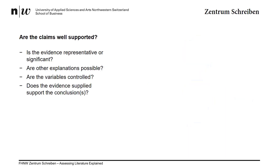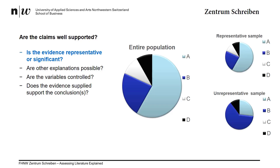There are four main aspects you should consider when assessing the level of support for the claims made in literature. The first aspect is whether the evidence is representative or significant. Testing the entire population is expensive, time consuming, and logistically impossible, so researchers tend to aim for representative samples — samples that consider the potential variety within the relevant group. But the relevant group first needs to be specifically identified. For example, first year students of international management at Swiss Universities of Applied Science.